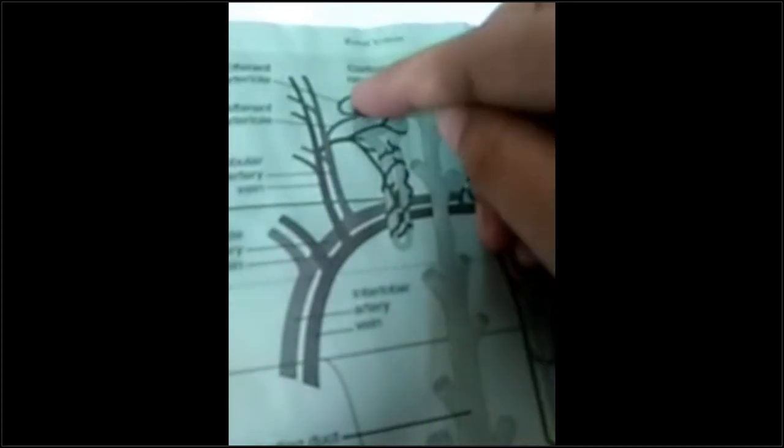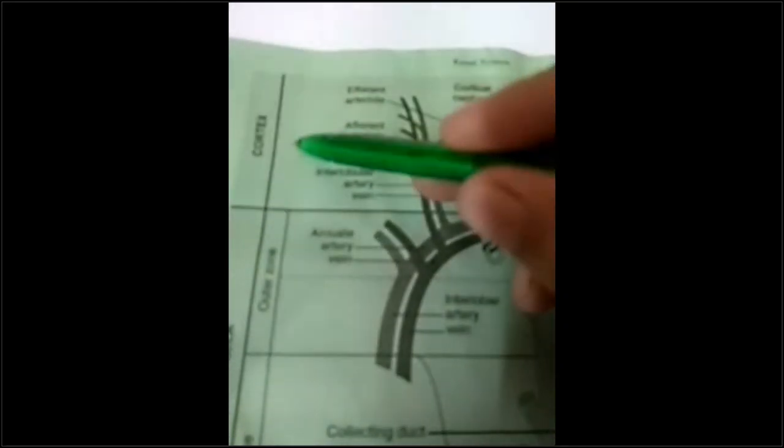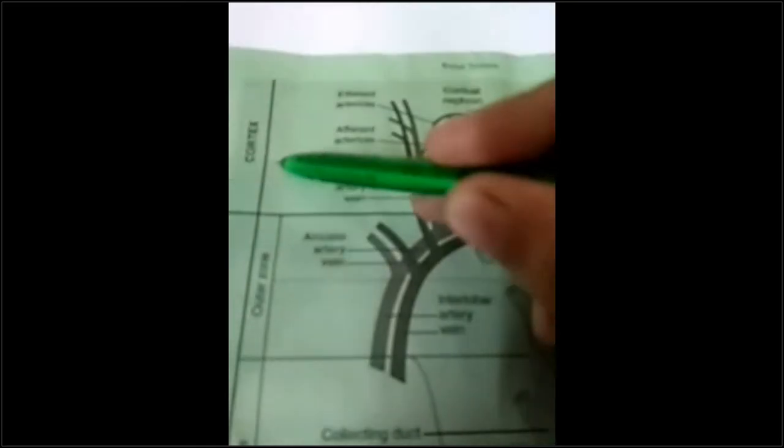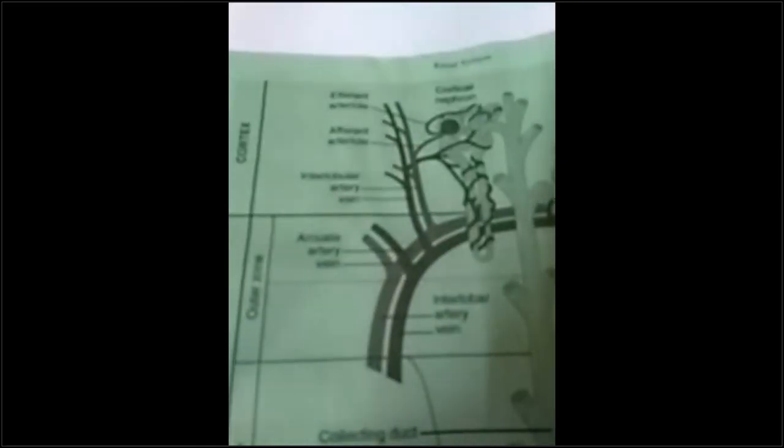This is the cortex of the kidney and this part is the medulla. This is the cortical nephron, where the glomerulus is present in the cortex. And in case of the juxtamedullary nephron, the glomerulus resides in the medulla.